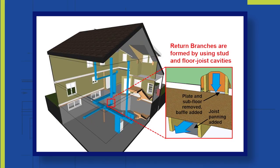A traditional return air system uses joist spaces and stud spaces. They'll drop it with a thermal pan of some sort, whether it be plastic or cardboard, and create a header to make its own sort of duct. That's then brought down into the basement and connected to a main trunk line for the furnace.